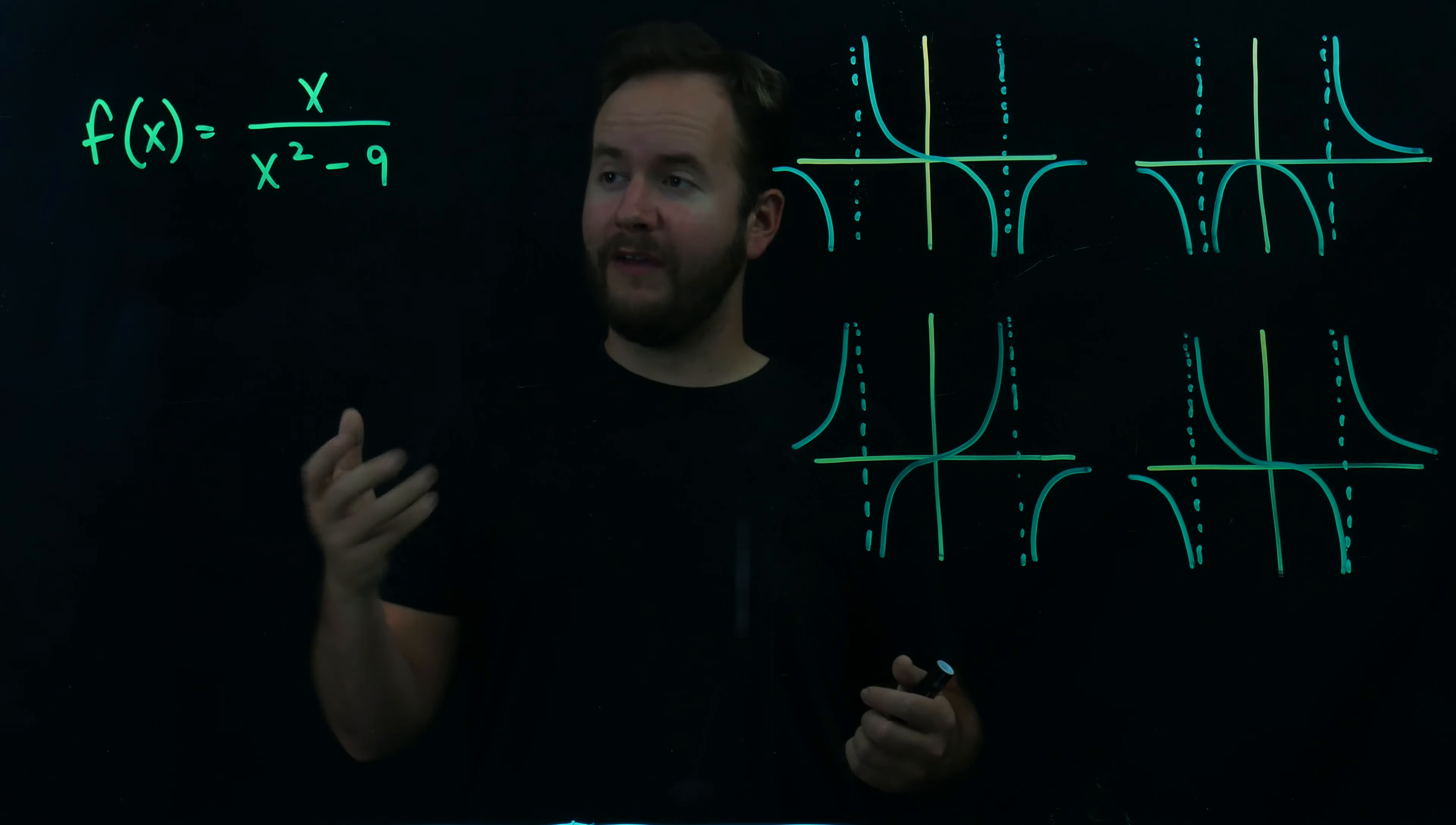Okay, how about plugging in a number between 0 and 3, like x equals 1? When I plug that in, I get 1 over 1 minus 9, which is negative 1/8, but I don't care about the number. I just care that it's negative.